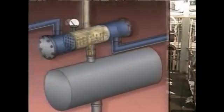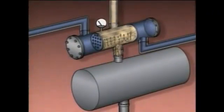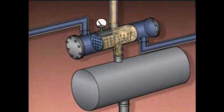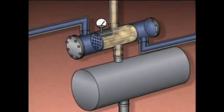Non-condensable gases can build up inside a condenser. When this happens, the gases insulate or blanket the tubes and reduce the amount of heat transferred in the condenser. As a result, less vapor will condense, and the pressure inside the condenser will increase. The increase in pressure may reduce the flow of vapor, or it could stop the flow altogether.